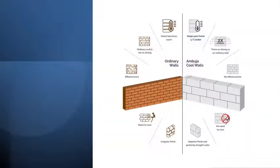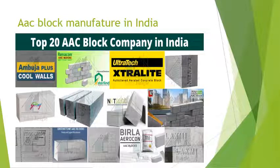Comparison highlights: AAC block keeps your house 5 degrees cooler, is twice as strong as ordinary walls, has no efflorescence, requires no curing, and gives a superior finish with perfectly straight walls. Ordinary clay brick walls become warm, are not as strong, suffer from efflorescence, require curing, and have irregular finish. AAC block manufacturers in India include Ambuja Plus, Cool Walls, Recon, UltraTech Xtraa, Godrej, Birla Recon, Laxmi Gold, and many others.